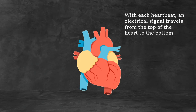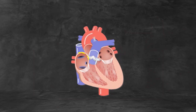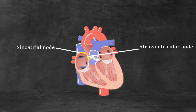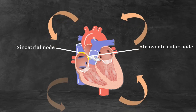With each heartbeat, an electrical signal travels from the top of the heart to the bottom, causing the heart to contract and pump blood. The signal begins in a group of cells called pacemaker cells, located in the sinoatrial (SA) node in the right atrium. The electrical signal travels to the walls of the atria, causing them to contract. The signal then moves down to the atrioventricular (AV) node, located between the atria and the ventricles, where it slows down slightly. Bundle branches carry signals from the AV node to the heart apex. A signal then travels along the walls of the ventricles, causing them to contract and pump blood out of the heart. The ventricles relax and the heartbeat process starts all over again in the SA node.